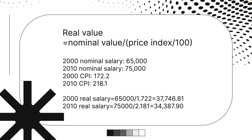To find a real value using a nominal value and a price index, the formula is: real value = nominal value divided by (price index / 100). For example, if the nominal salary in 2000 is $65,000 with a CPI of 172.2, and the nominal salary in 2010 is $75,000 with a CPI of 218.1, then the real salary in 2000 is $65,000 divided by 1.722, which equals $37,746.81. The same method applies for 2010.